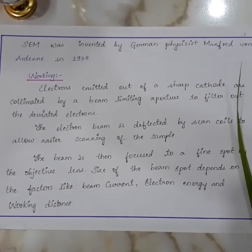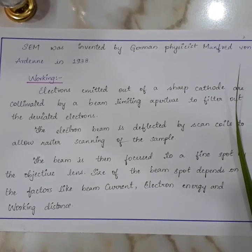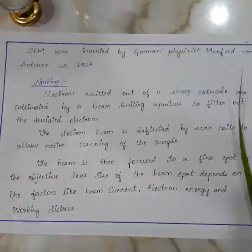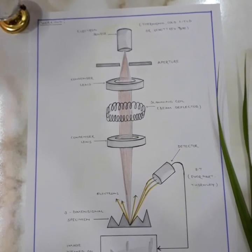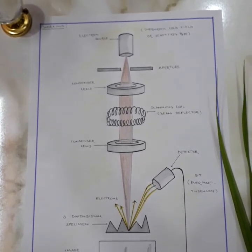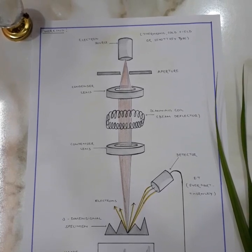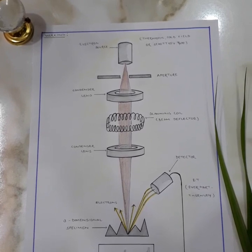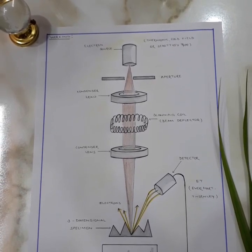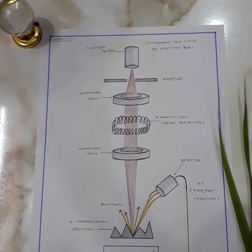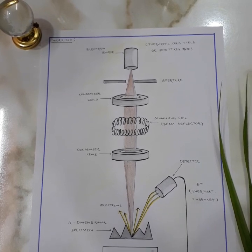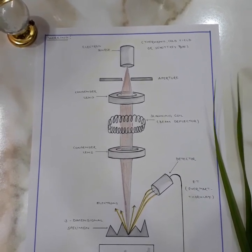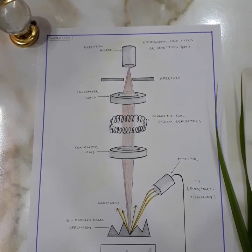The size of the beam spot depends on factors like beam current, electron energy, and working distance. This diagram shows how an SEM works. After the electron beam is focused to a fine spot by the objective lens, a detector detects different signals resulting from the interaction of the electron beam and sample. The detector signals are recorded pixel by pixel during the scan and collated to create an image.